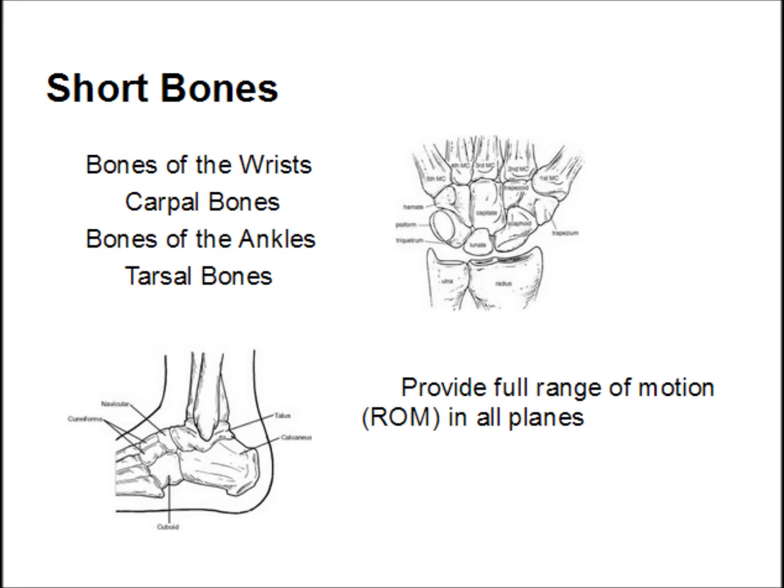The next type of bones are called short bones. These are more cubical or round. They include the carpal bones, or bones of the wrist, and the tarsal bones, or bones of the ankle. They provide full range of motion in all planes.